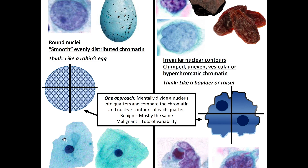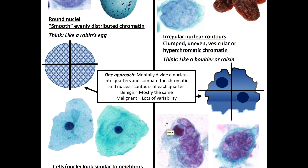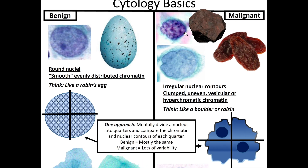If we divide a benign cell into quarters, the chromatin is similar in color and texture across all quarters. But if we try to do that with a malignant cell, there are more irregularities in the different sectors. Malignant nuclei have irregular nuclear contours — the chromatin is clumped, uneven, or vesicular. You can think of it like a boulder or a raisin versus a robin's egg for the benign.